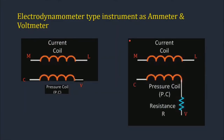When used as an ammeter, the current coil and pressure coil have no resistance and are connected in parallel. When used as a voltmeter, the current coil and pressure coil are connected as normal.